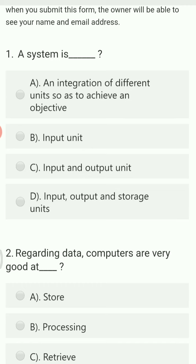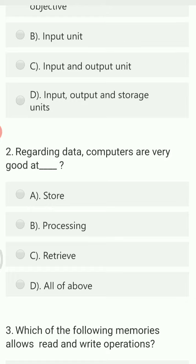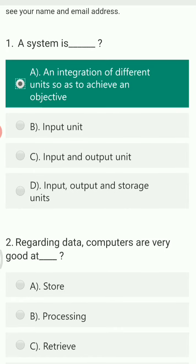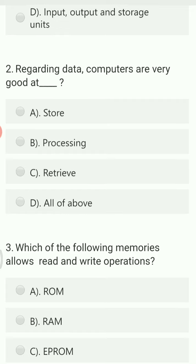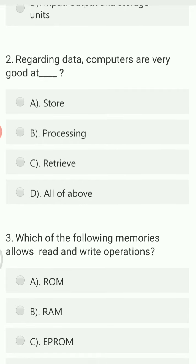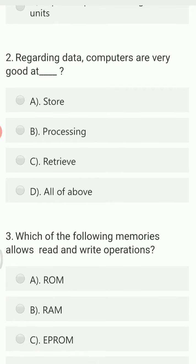Hence, a system is option A — an integration of different units so as to achieve an objective. Regarding data, computers are very good at: store, processing, retrieving, or all the above. In computers, we can store data, process data, and also retrieve data.